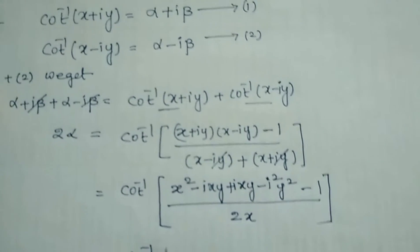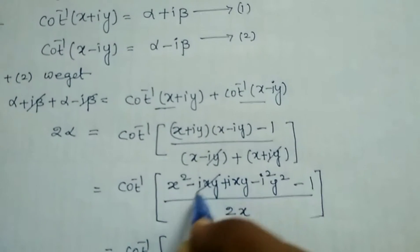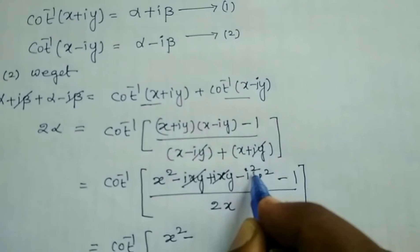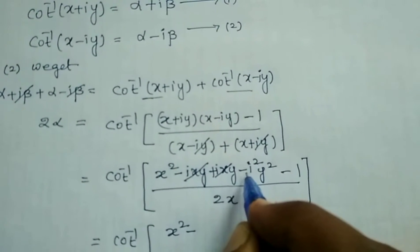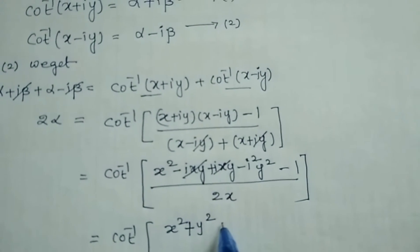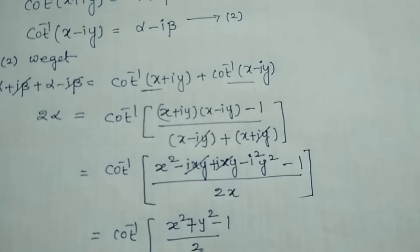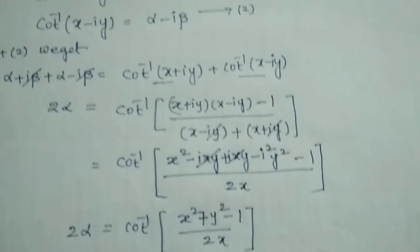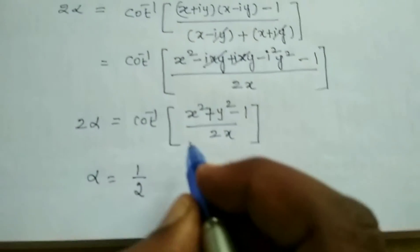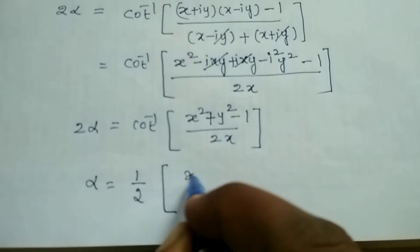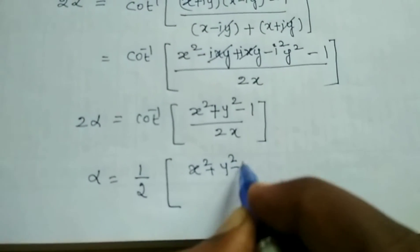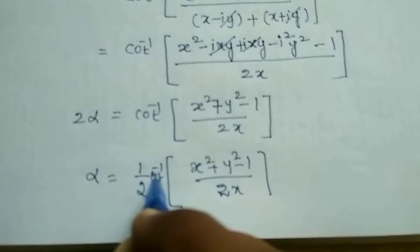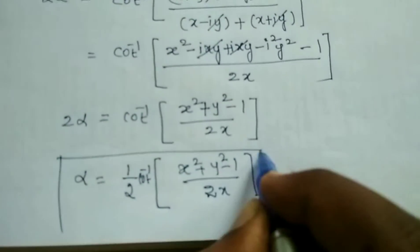Simplifying further: i squared is minus 1, and there is already a minus sign, so minus times minus gives plus. Therefore 2 alpha equals cot inverse of x squared plus y squared minus 1, all divided by 2x. So alpha equals one half times cot inverse of x squared plus y squared minus 1 over 2x.